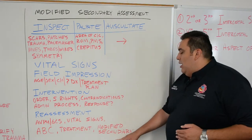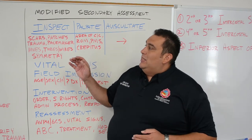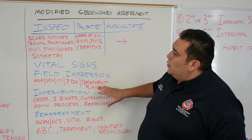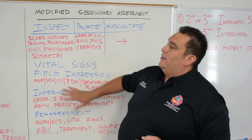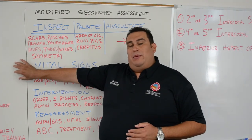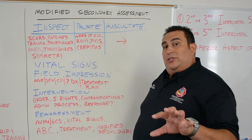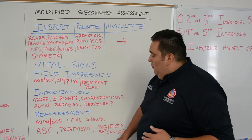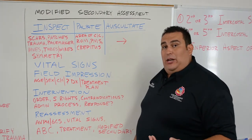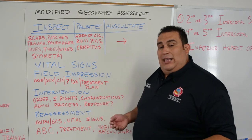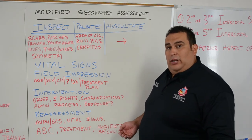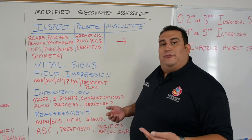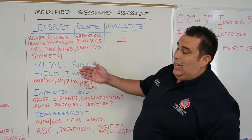Then I'm going to do a modified secondary assessment. As part of this, with our inspect, palpate, and auscultate, we also go back to the verbal assessment. For chest pain, for example: initially my patient's chest pain was an 8 out of 10. Part of my modified secondary assessment would be to ask, what is your pain now after we assisted you with your nitroglycerin? On a scale of 0 to 10, 10 being the worst pain possible — what's your pain now? It's a 4. It went from an 8 down to a 4.